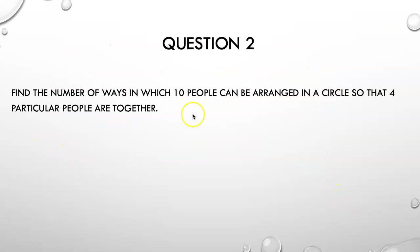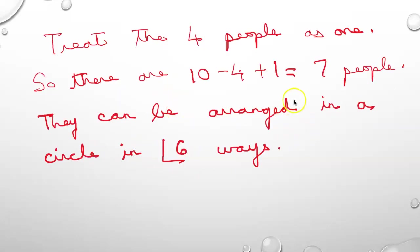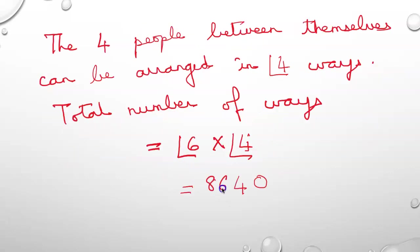Question 2: Find the number of ways in which 10 people can be arranged in a circle so that 4 particular people are always together. Treat the 4 people as 1, so there are 10 minus 4 plus 1, that is 7 people, and they can be arranged in a circle in (7-1) = 6 factorial ways. The 4 people can be arranged among themselves in 4 factorial ways. So the total number of ways is 6 factorial into 4 factorial, which equals 8640.